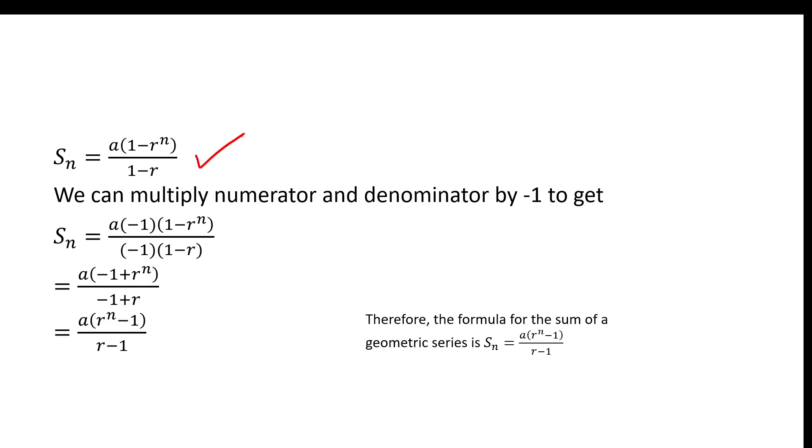And we don't have to do this next step, but a lot of times what you'll see is people will take this formula right here. They'll multiply top and bottom by negative 1, and so when you distribute that negative 1 into the bracket in the numerator, you get negative 1 plus R to the N. When you distribute it into the denominator, you get negative 1 plus R. And so ultimately what you end up with is a formula S_N equals A times R to the N minus 1 over R minus 1. Pretty ingenious.